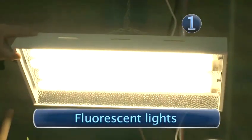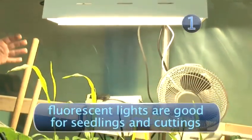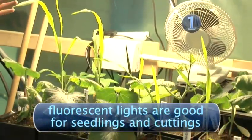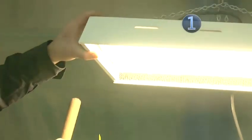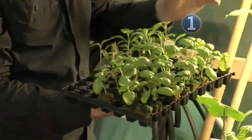Step 1. Fluorescent Lights. Fluorescent lights give off a cool bluish light which is particularly suitable for seedlings and cuttings. They give a wide spread of light and don't generate much heat so they're ideal for the early stages of plant growth.